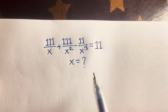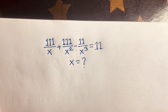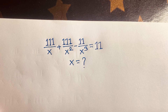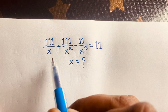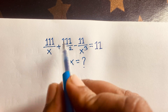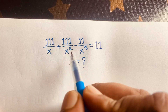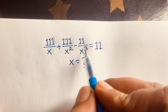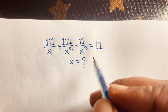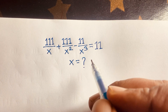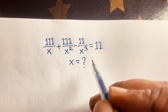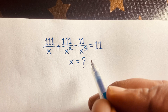Hello everyone. In this video we have solved an interesting Math Olympiad question. It is a German Math Olympiad question: 111 over x plus 111 over x squared minus 11 over x cubed is equal to 11, and we'll find out what is the value of x.